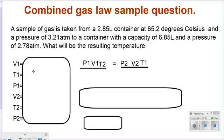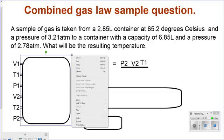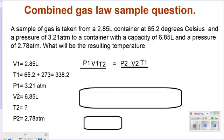The temperature is 65 degrees Celsius at first. Convert that to Kelvins, and they want the resulting temperature, which is not given to us. Then I'm given also a pressure of first 3.21 and then 2.78. Given those numbers, I write down my list.